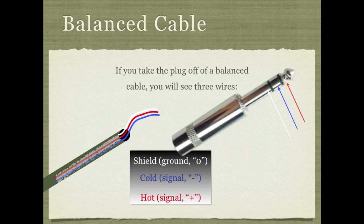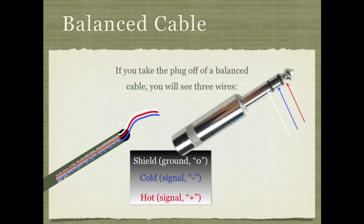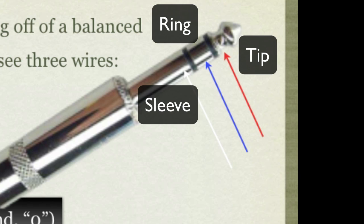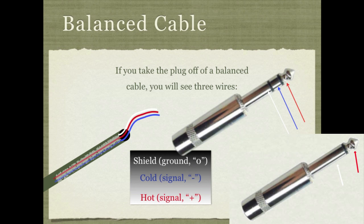For a balanced quarter-inch cable, this is called a TRS connector — tip, ring, sleeve — because it has three spots for electricity to flow through. The tip contains the hot, the ring contains the cold, and the sleeve contains the ground. That's different from a regular unbalanced cable because of the addition of the ring.